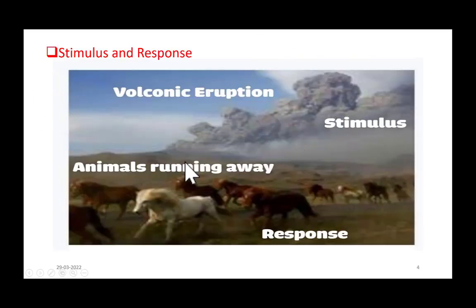So here is an illustration for stimulus and response. Look here, there is a volcanic eruption. Seeing this, the animals are running away. The volcanic eruption is stimulus and the animals running away is response. So, stimulus is some change occurring in the nature and response is action performed by organisms. Why does this response occur in organisms? That is, for their survival. So, stimulus is an environmental change.